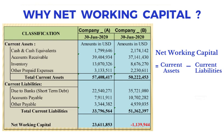This means Company A has a positive net working capital of US$23,611,853. The company can easily pay off its short-term liabilities or debt using its current assets. It is a sign of a profitable and efficient business.